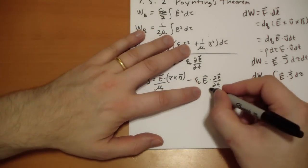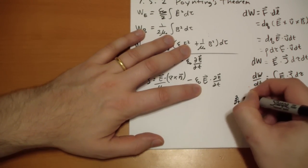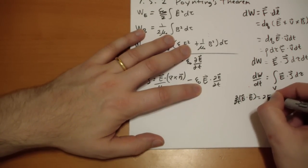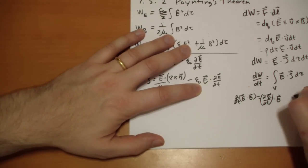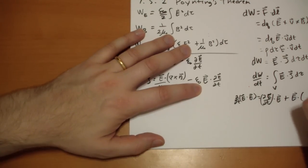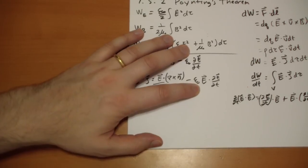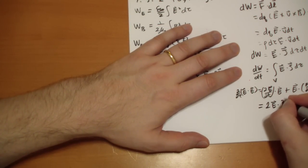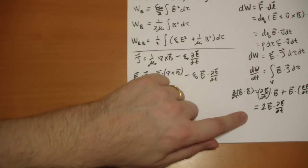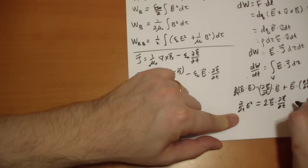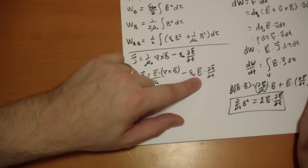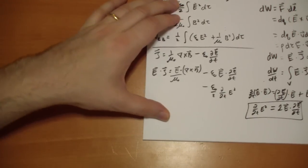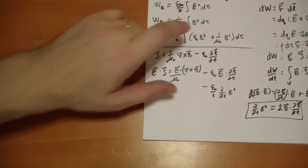If we take the time derivative of E² — which is just E·E — that equals 2 E-vector dot (∂E/∂t) by the product rule. So E-vector dot (∂E/∂t) is one-half of d/dt(E²). That means the second term becomes minus (ε₀/2) d/dt(E²). You can see the ε₀ and E appearing — we're going to get there.